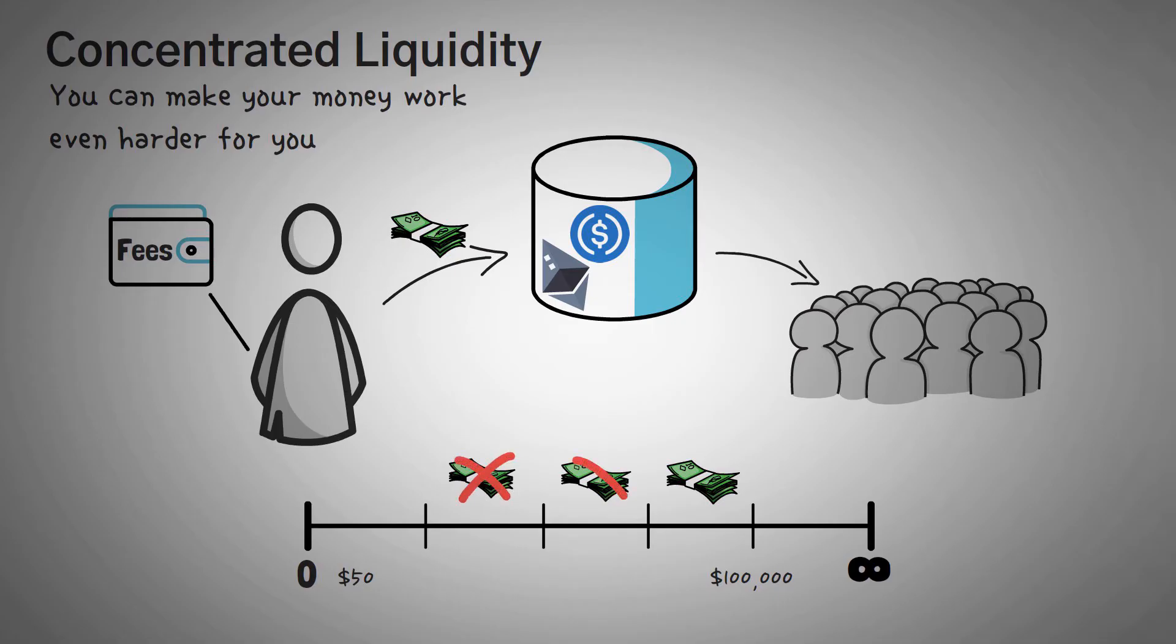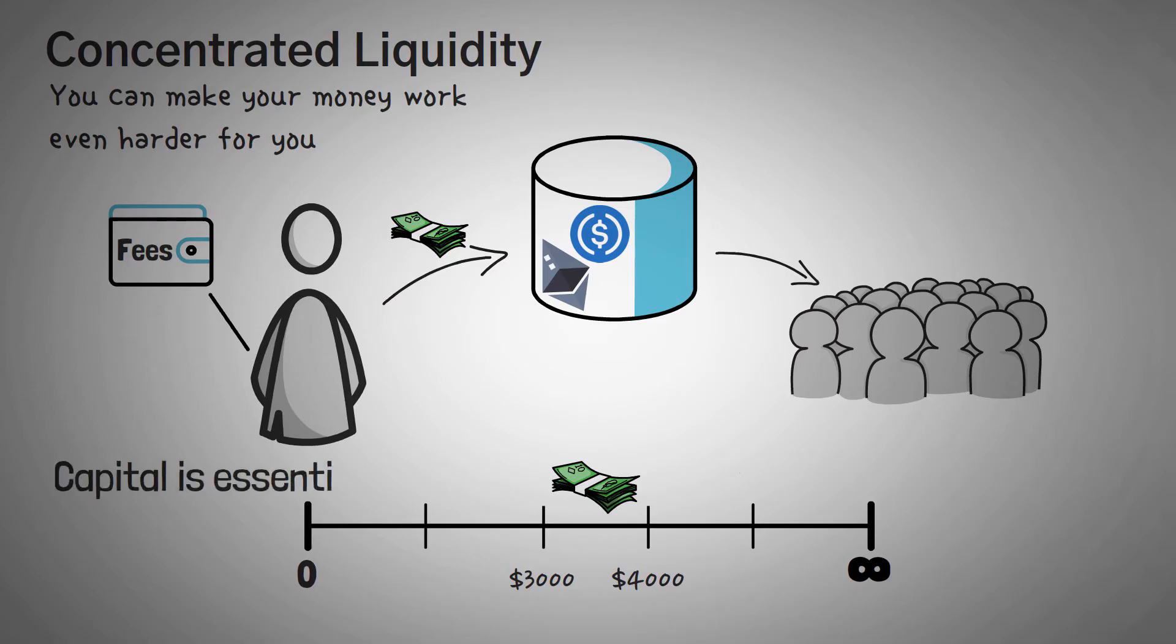Now, when you provide liquidity, it evenly spreads your money for traders to use between the prices of $0 and infinity dollars. This means if Ethereum goes to $100,000 or even plops down to $50, the money that you provided is fairly allocated across all price ranges for traders. V3 changes this. Instead of letting your assets be spread thin across all price ranges, you can now select where you want to deploy your concentrated liquidity. So instead of giving it some USDC and then some Ethereum and then basically collecting fees here and there, you can say, here's some USDC and some Ethereum, but only let it be used between the prices of $3,000 and $4,000.